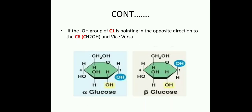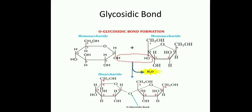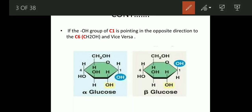The second important point is alpha-glucose and beta-glucose. Here the cyclic structure of glucose is shown. This is the first carbon atom, second, third, fourth, fifth, and sixth carbon atom. So what is alpha-glucose? When the OH group attached to the 1st carbon atom is opposite to the 6th carbon atom, then we call it alpha-glucose.